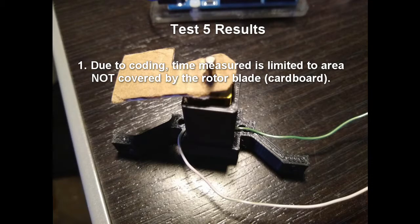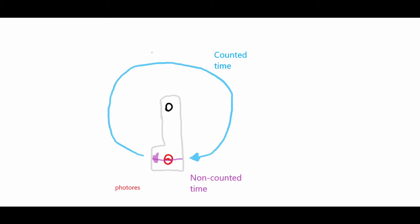So test five was a success. There are some limitations to this design. However, mainly the rotor blade size can affect your RPM. For example, if you have a really, really wide blade, it may throw off the RPM as shown. So in the coding, the light blue is the counted time. That is the time that's actually measured. If you have a really, really wide blade that covers that purple arrow, then it may throw off the RPMs. Luckily, the code does allow for copy and pasting. So you can actually get the time it takes in that purple arrow zone. However, it is extra work.